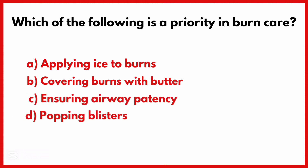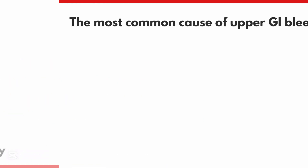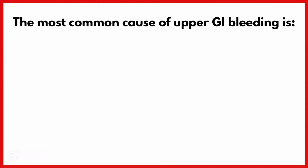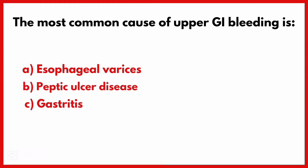Which of the following is a priority in burn care? The correct answer is option C: Ensuring airway patency.